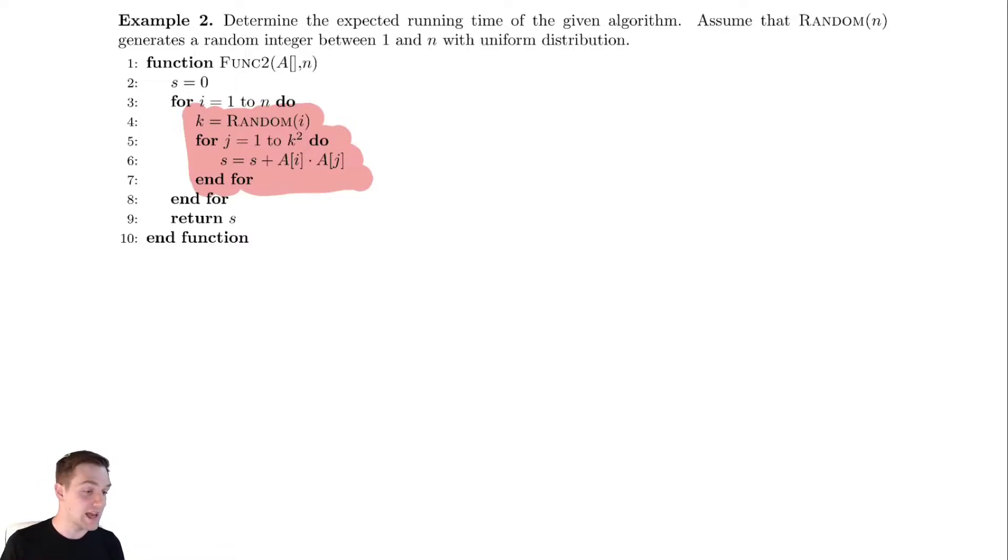So let's begin by pretending like that is what we're analyzing. Let's call that chunk of code, the runtime of it, to be T1. So let T1(i) be the running time of lines 4 through 7.